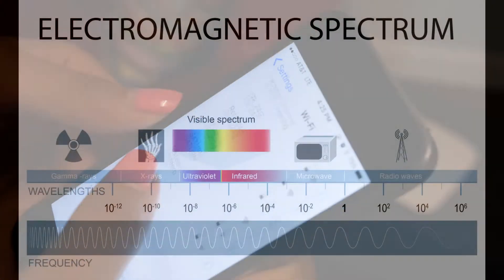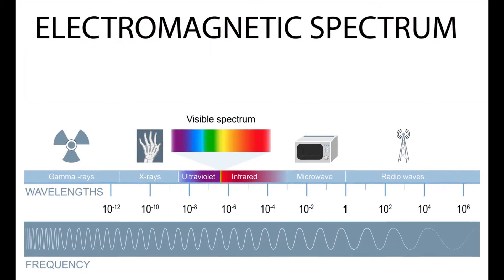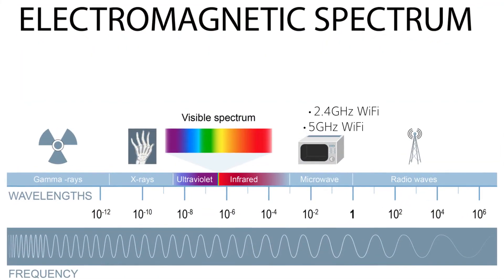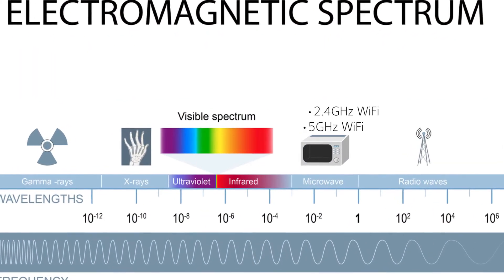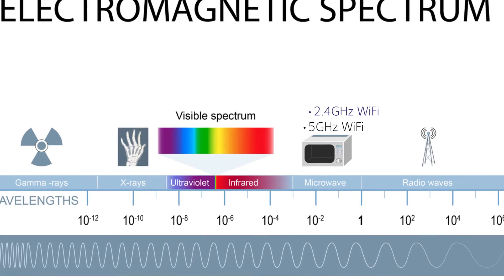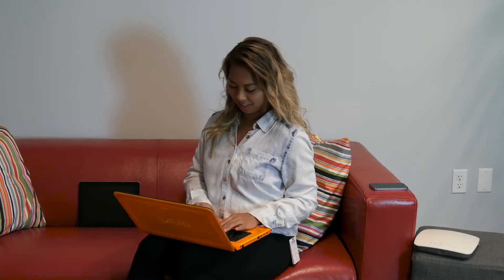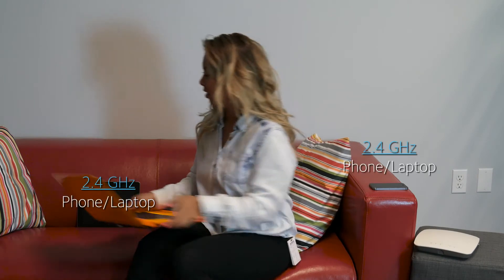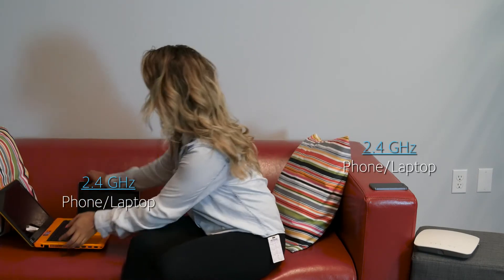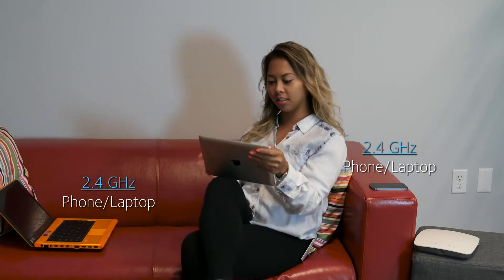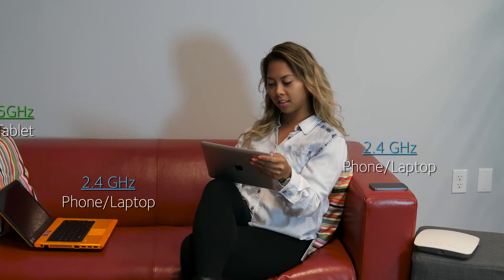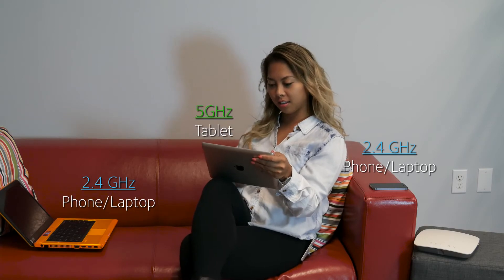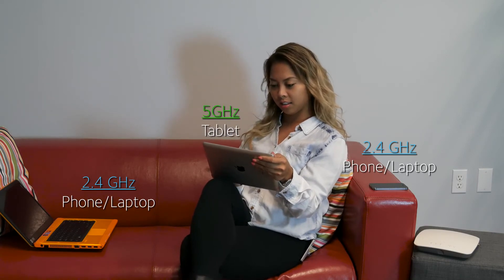Wireless local area networks typically operate in two frequency bands: 2.4 GHz or 5 GHz. A multi-band wireless access point allows devices to connect to different frequencies. It speeds up your Internet the same way an additional lane unclogs traffic.